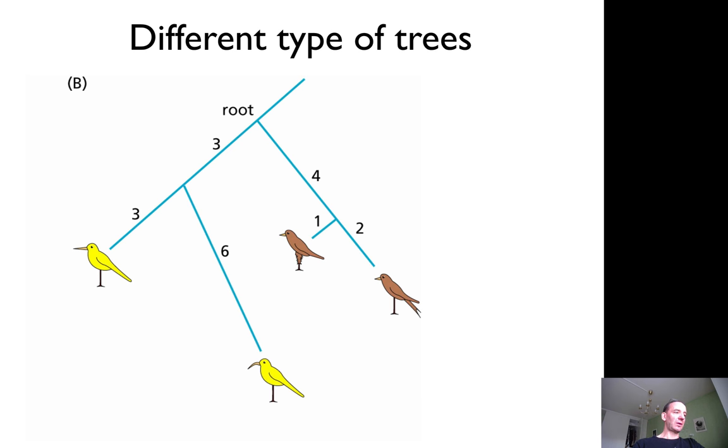That means that between the two yellow birds there are nine mutations. To do that, you would have to calculate the mutations from the common ancestor, which is in the root here. If you want to make every line equally long, you would have a tree that looks like this.